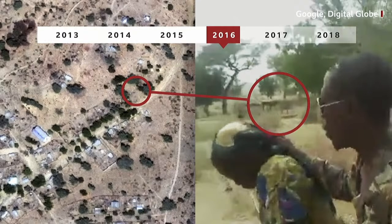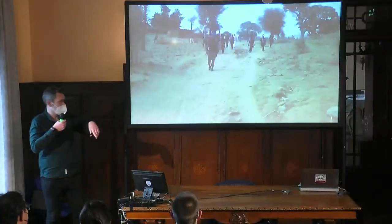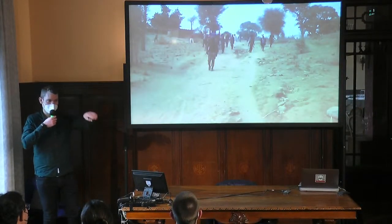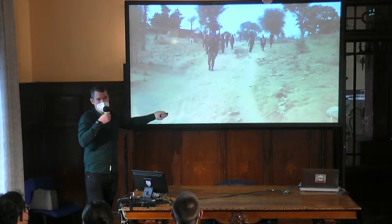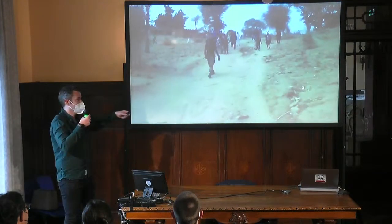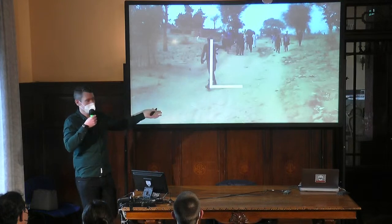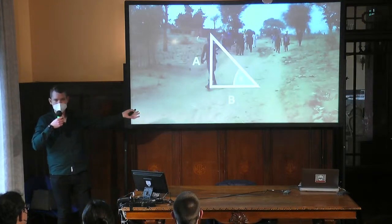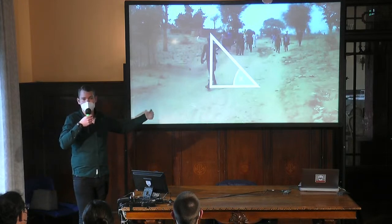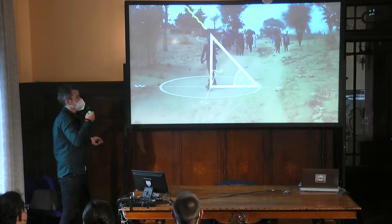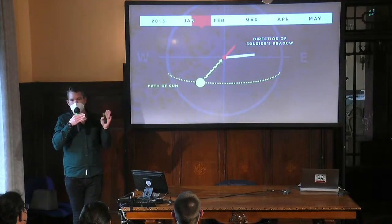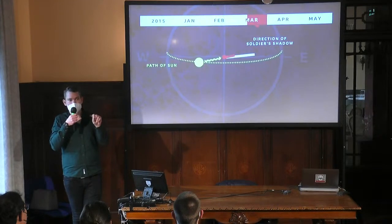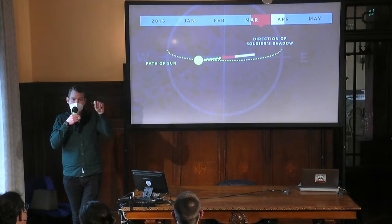Has anyone seen a sundial? Sundials cast a shadow based on the direction of sunlight — which only occurs at specific times of specific years. We turned the human rights abuser in the footage into a sundial: he casts a shadow, and that shadow allowed us to narrow the filming date down to within April to May 2015. This was a video uploaded in 2018 — and now we had the exact location and a very precise window of time.